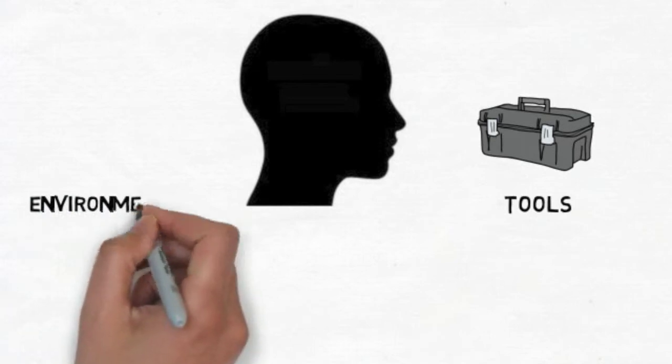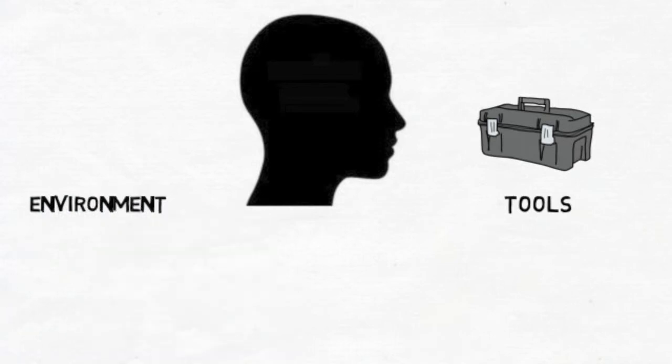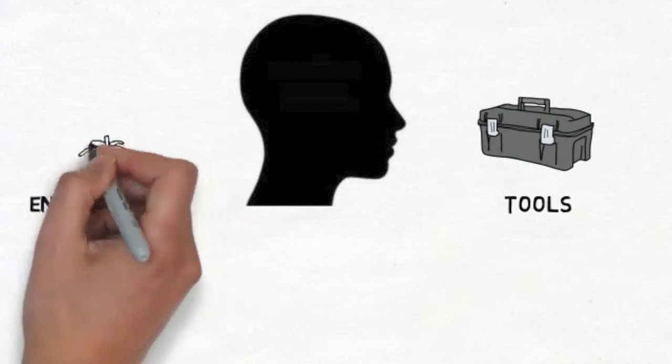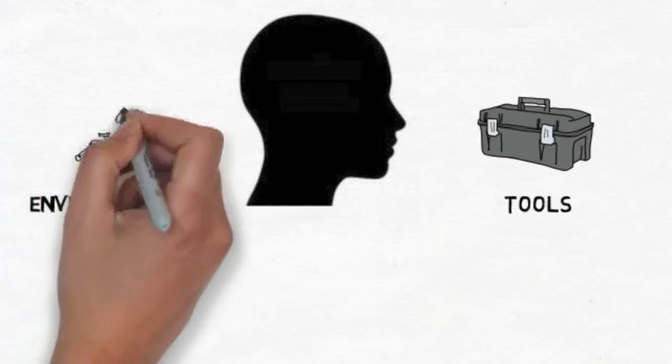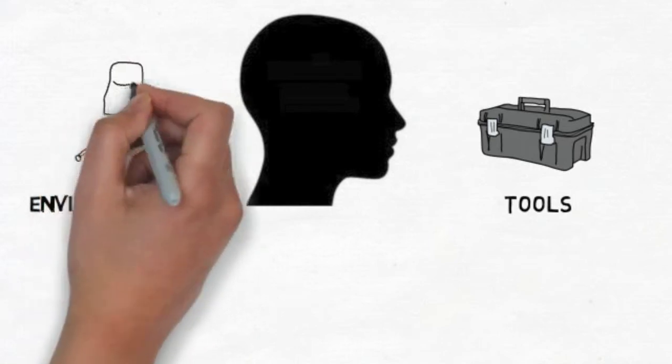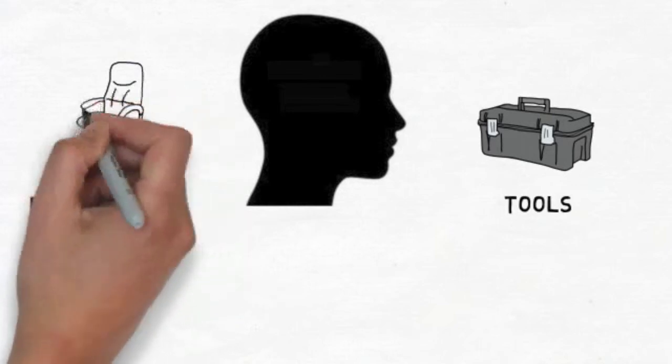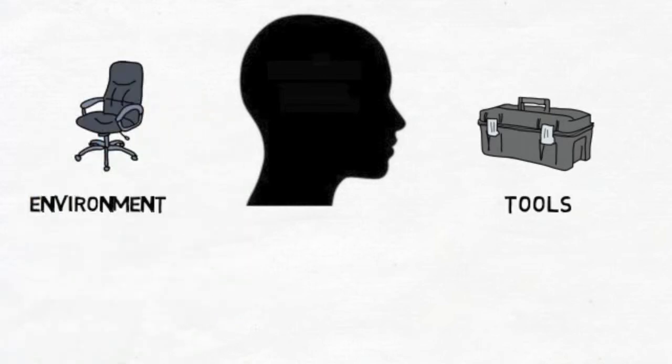The environment in which we operate dramatically influences our thinking process. How easy is it to be distracted by emails? How much of the everyday noise creeps into our mind? We need to give our mind space to think.